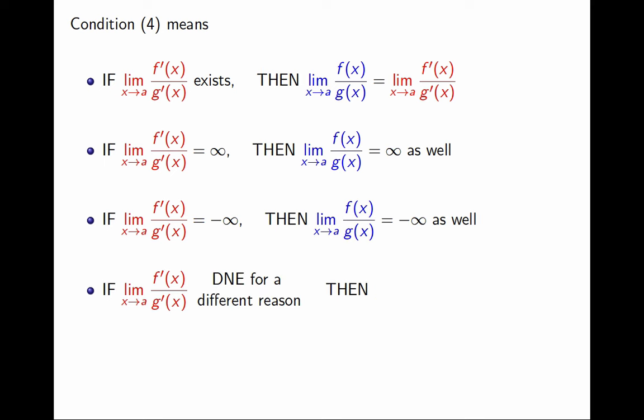But, if the limit of f' over g' does not exist for a different reason, say it is some function that oscillates in a weird way, and that's why the limit doesn't exist, then I can draw no conclusion about the original limit. The original limit may well exist, and be anything, or perhaps it doesn't exist.